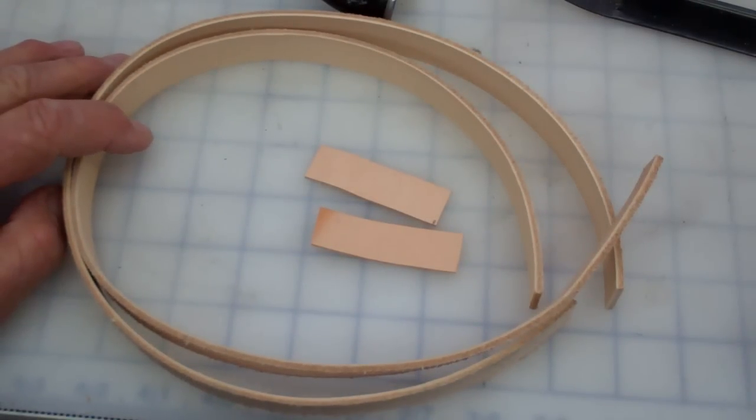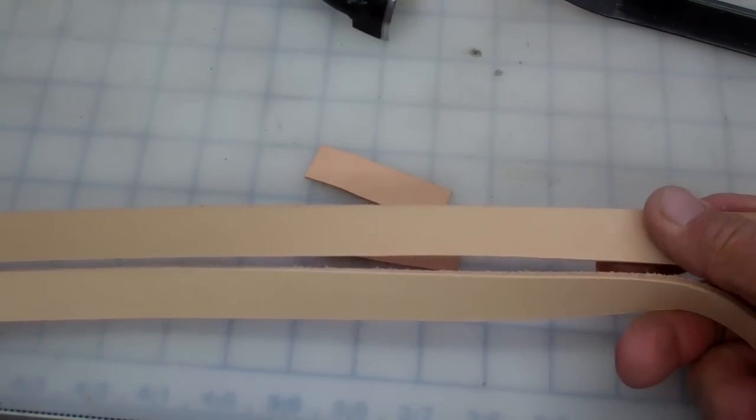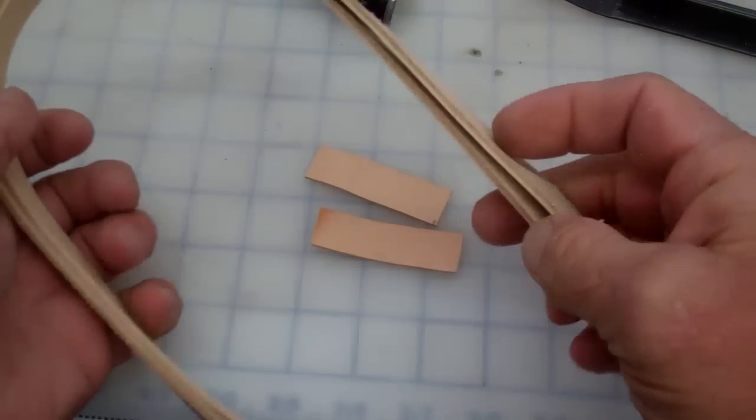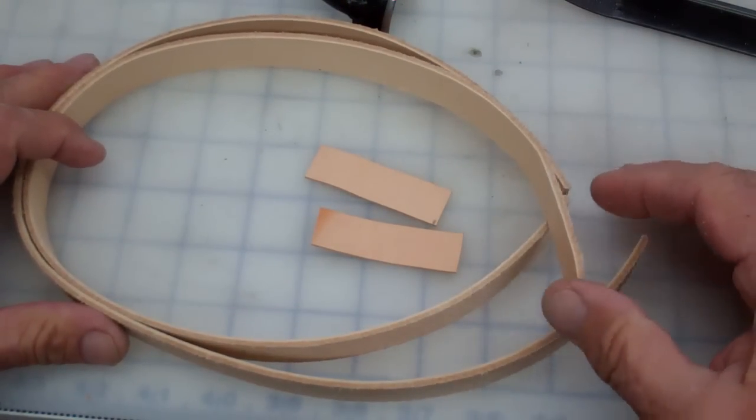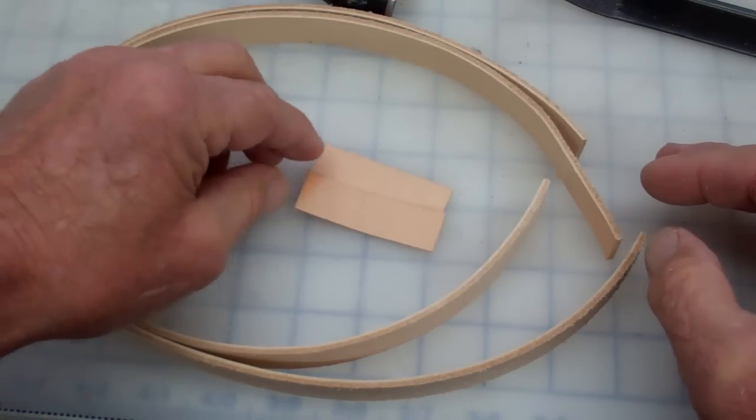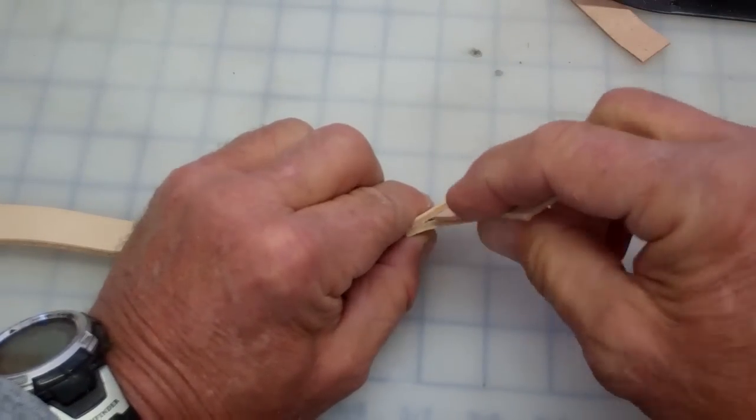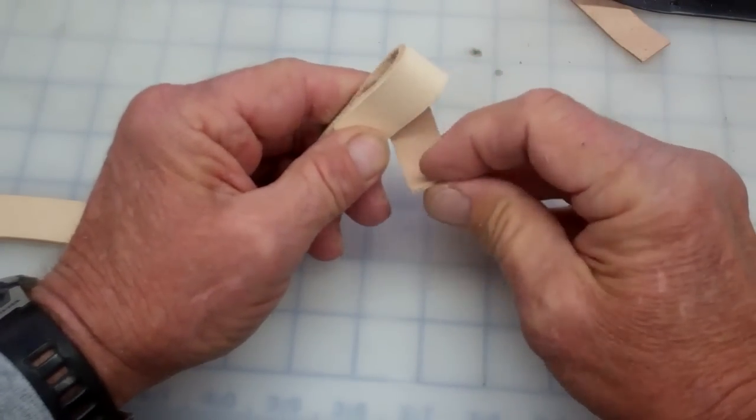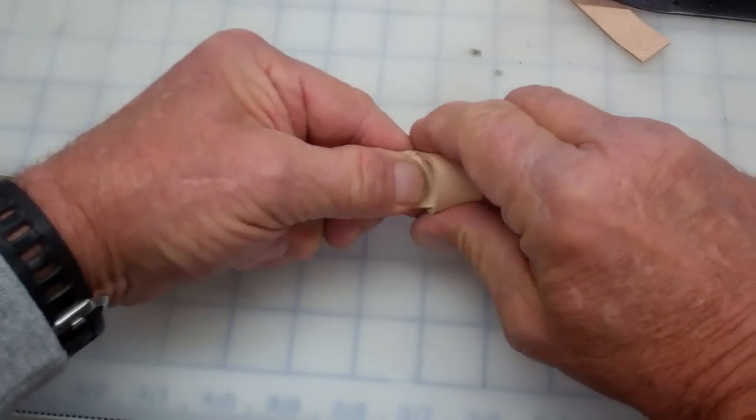We're back at the work table. I cut two pieces out of four or five ounce veg tan leather, three quarters of an inch wide, 24 inches long each piece. And then I cut two belt keepers that are approximately about two and a half inches long. And this is what your belt keeper will be going into on the end.